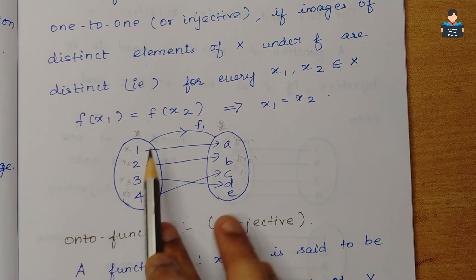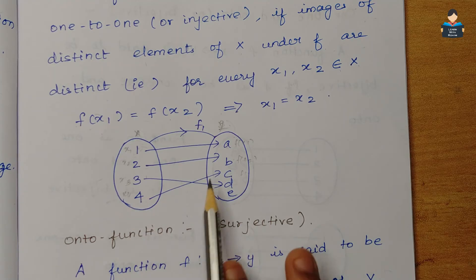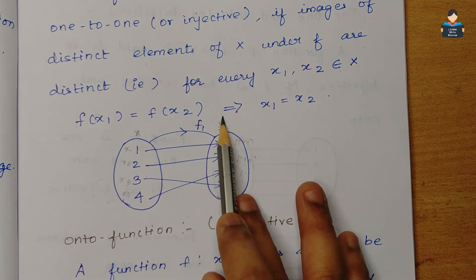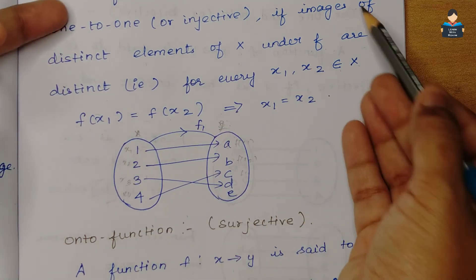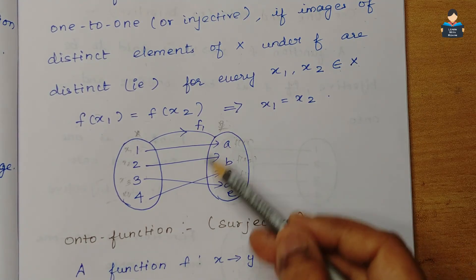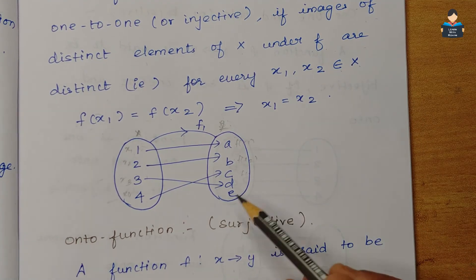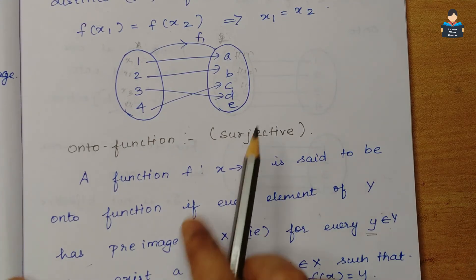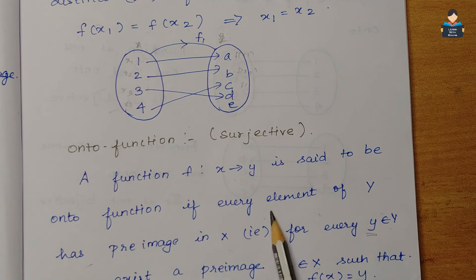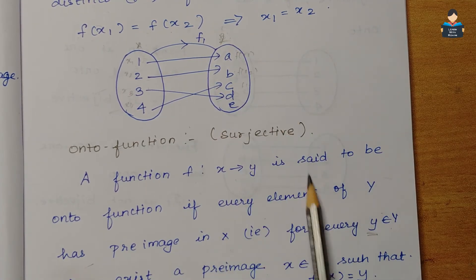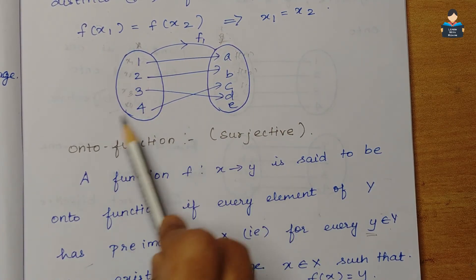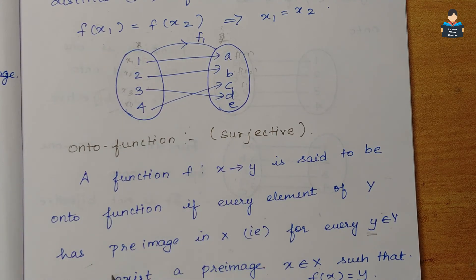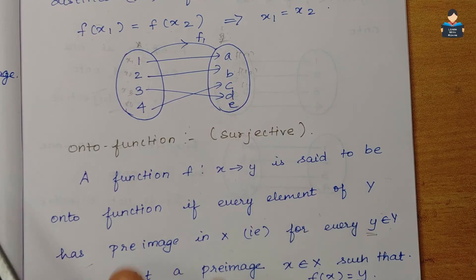Looking at the definition of onto function: if you look at this, element e is left over. Every element of Y has a pre-image — pre-image means X maps to the elements of Y. This is the onto function.